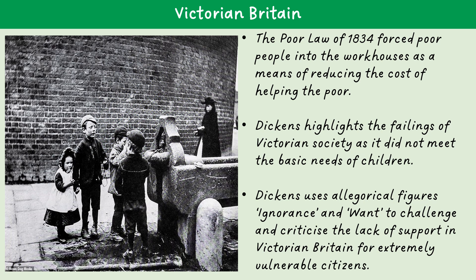Dickens used his novella to represent the failings of Victorian society, as it did not meet the basic needs of children and those living in poverty. The ignorance of society was monstrous because it demonstrated a willingness to overlook the state of deprivation of children who relied on society for their protection. To best represent these failings, Dickens uses the allegorical figures Ignorance and Want to address the conditions of the poor during the time in which he was writing.